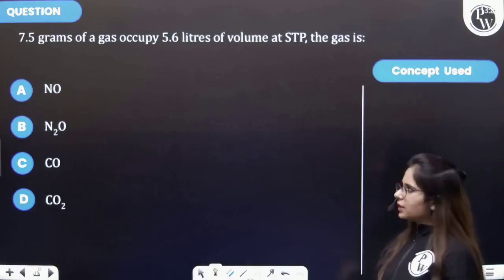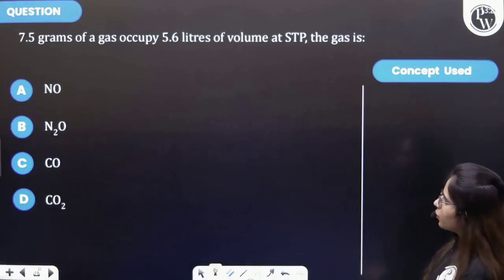Students, let's see this question. The question says that 7.5 grams of a gas occupy 5.6 liters of volume at STP. Then the gas is...